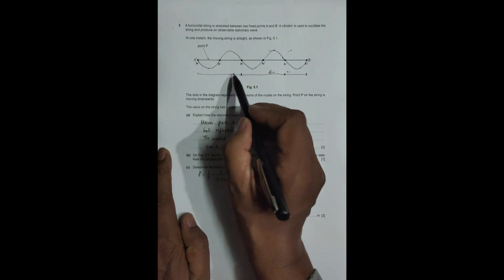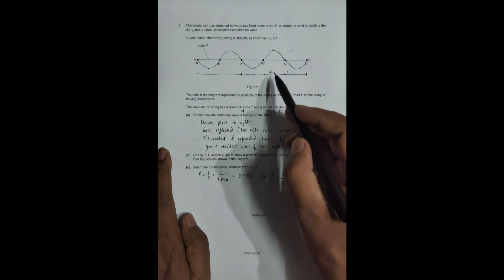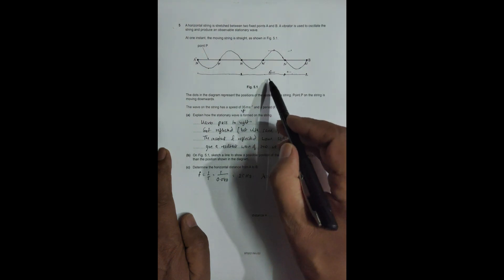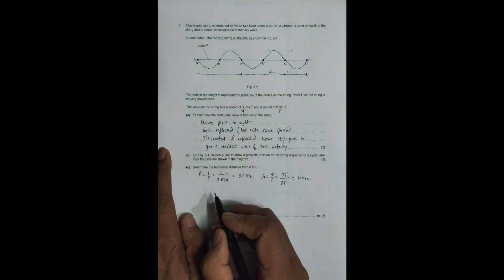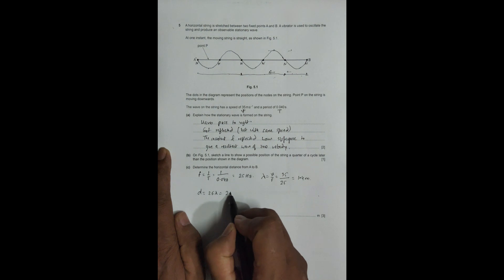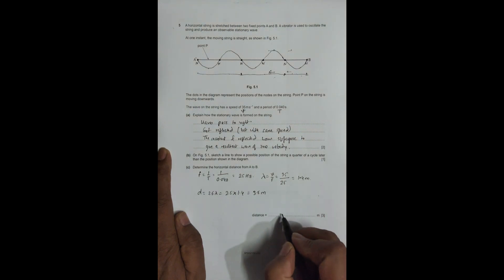So the distance from A to B equals 2.5λ = 2.5 × 1.4 = 3.5 meters. The distance is 3.5 meters.